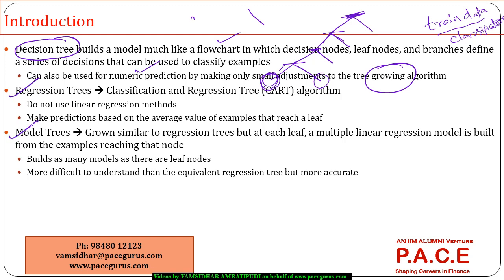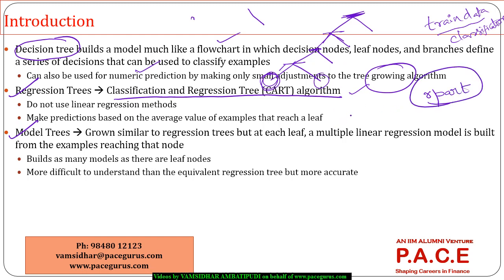The two types are regression trees, which implement what is called the CART algorithm — Classification plus Regression Trees — and model trees. In R, the CART algorithm is executed through the rpart package, which stands for recursive partitioning. The CART algorithm is basically a classification and regression tree.